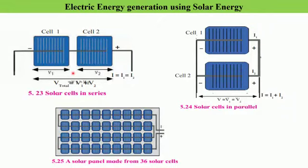Let us now try to understand how we can connect photovoltaic cells in two different ways so that we can increase the potential difference. Last year you studied about resistors connected in series and parallel. When resistors were connected in series, the total potential difference was given by the sum of the potential differences across the resistors, and the current through each resistor remains the same as the total current flowing through the circuit.